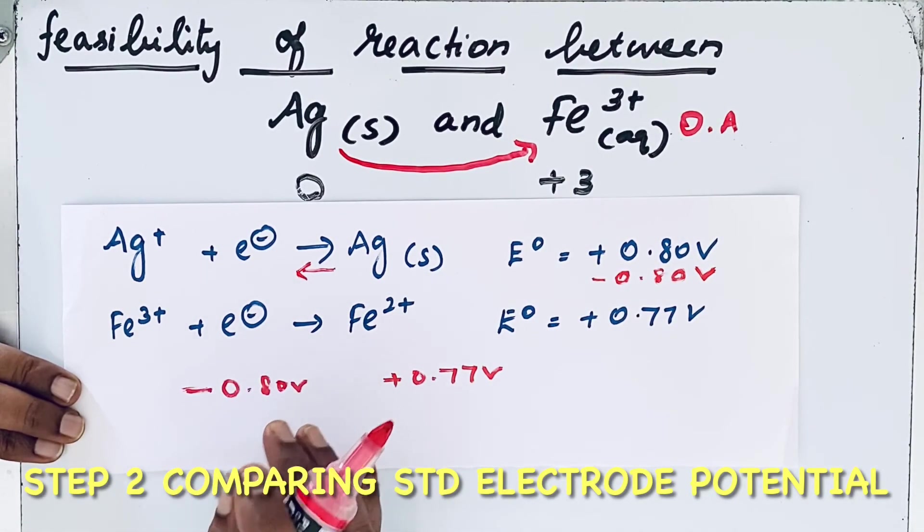For a redox reaction to be feasible, the electrode potential should be greater, that means it should be a positive value.